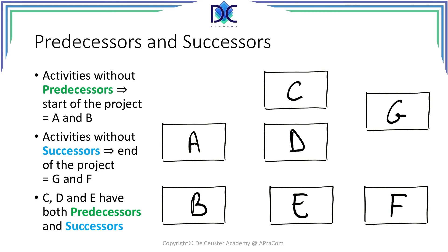Let's look at the relation between A, C, and D. From our example, C and D have a common predecessor which is activity A. E has a predecessor which is B. C and D are predecessors for G, and E is a predecessor for F. The arrows in this graph indicate the relationship between the different activities. We will look at this later in more detail when we are building precedence diagrams and calculating the critical path, project duration, early start, early finish, and other parameters of the project.